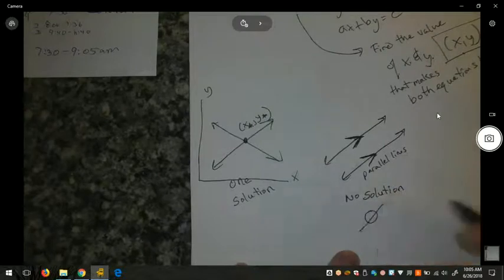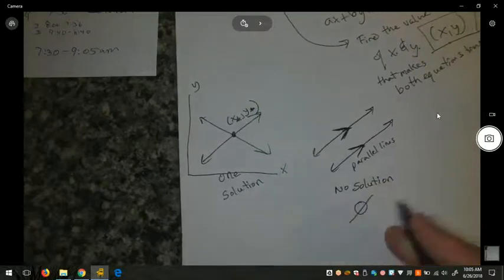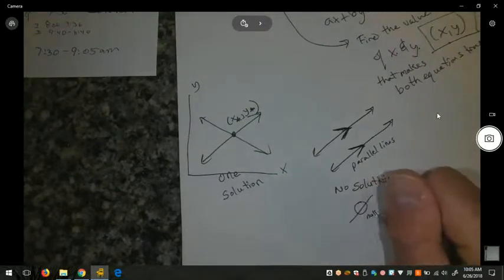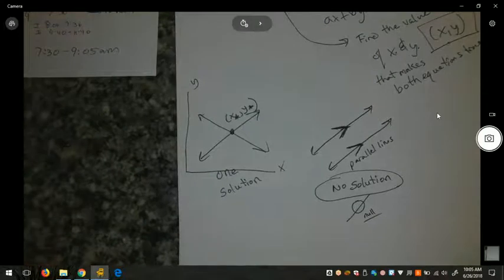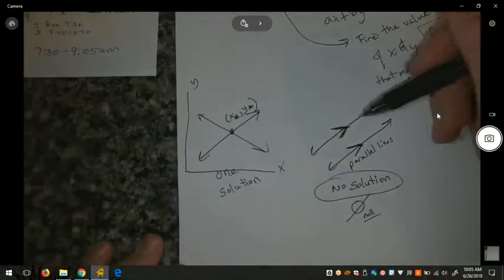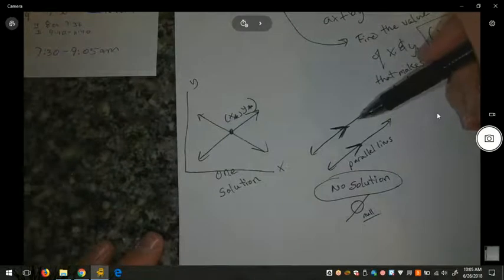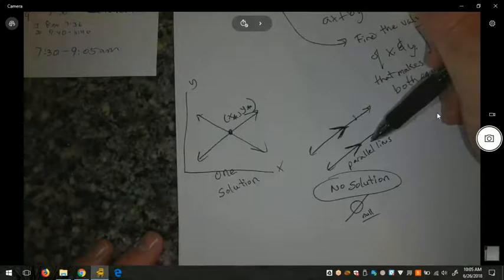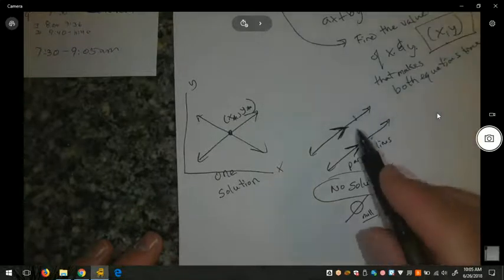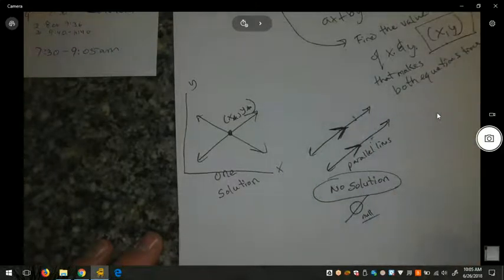Often represented by this right here, it's the null symbol, which means no solution. So for linear equations or a system of linear equations, we have maybe a real life situation or just some equations that are given that we know the equations are true and they're parallel. They will never intersect. Then we're never going to find a solution that works for both of them at the same time.